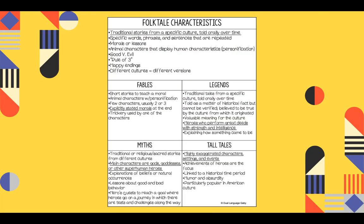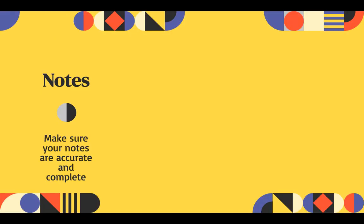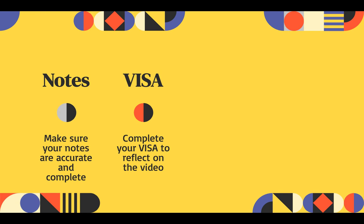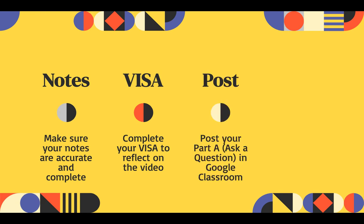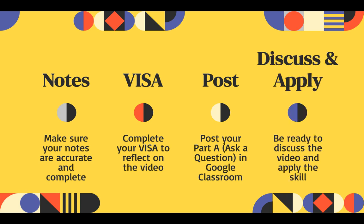You should have your note taker filled up by now — there was a lot to say about these. Make sure those notes are done accurately and completely. Make sure you complete your visa to reflect on your notes, and post your part A in Google Classroom or wherever else your teacher has asked you to. Be ready to discuss the video and apply the skill — you'll need to read a text and decide what characteristics make it a folktale, why that culture would value this story, and what lesson or theme the culture wanted to showcase with it.